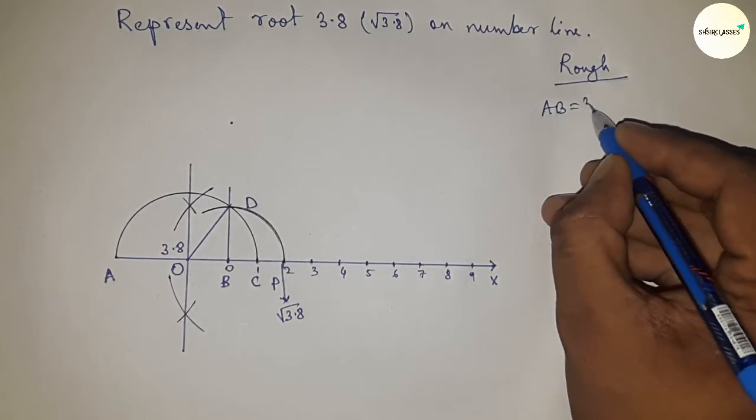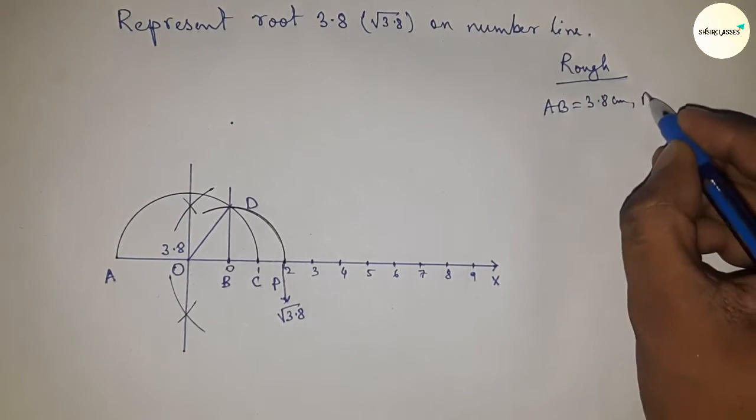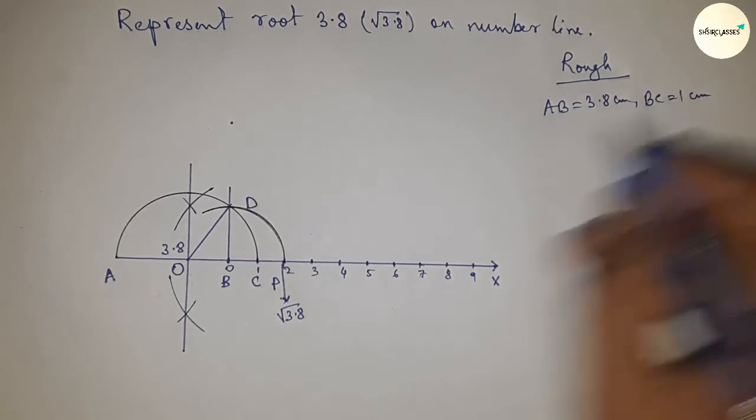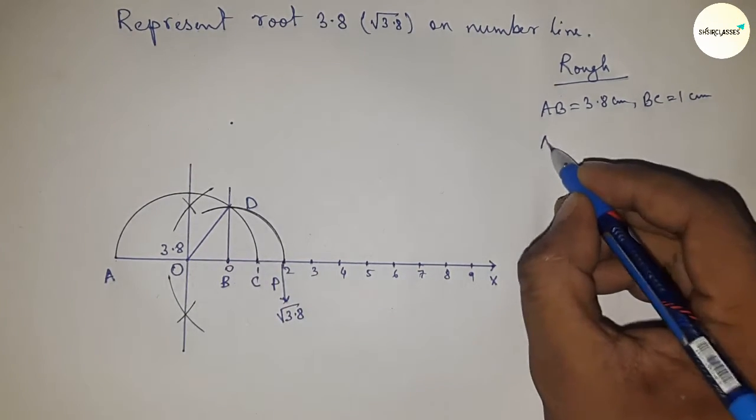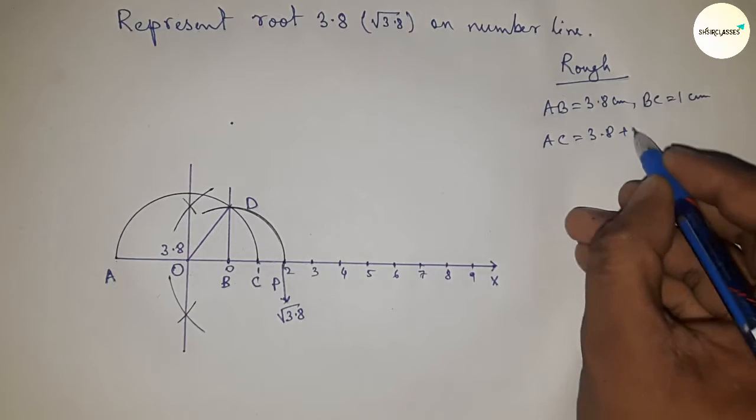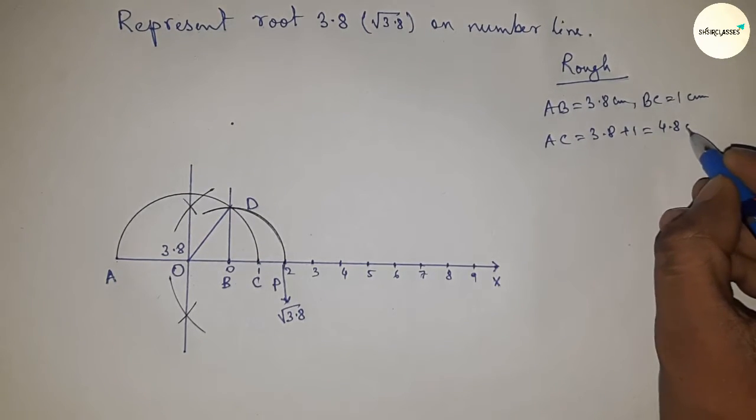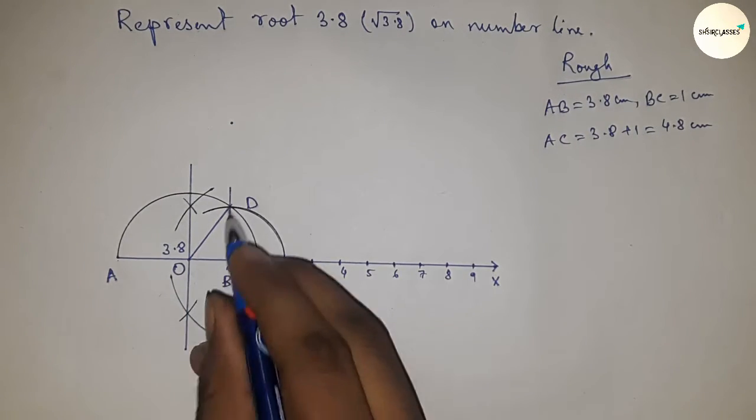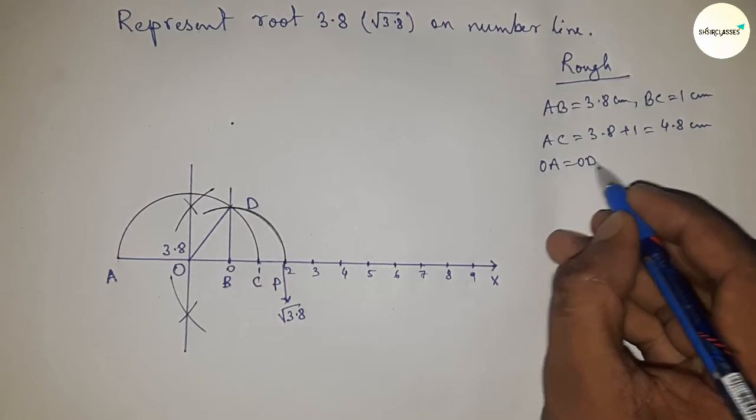Given AB equals 3.8 centimeters and BC equals 1 centimeter, we can write AC equals 3.8 plus 1, which is 4.8 centimeters. The radius OA, OC, and OD equals 4.8 divided by 2, which is 2.4 centimeters.